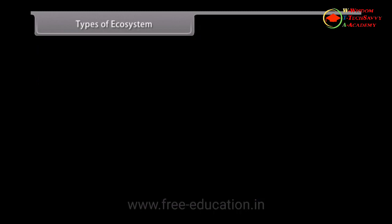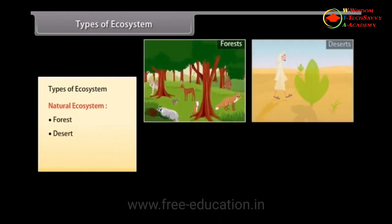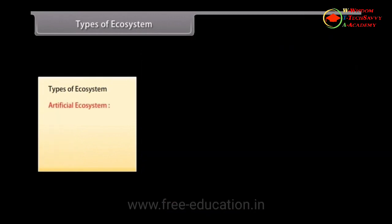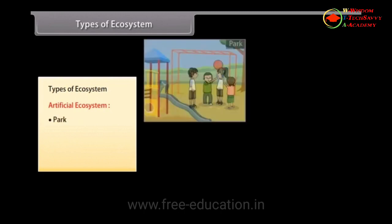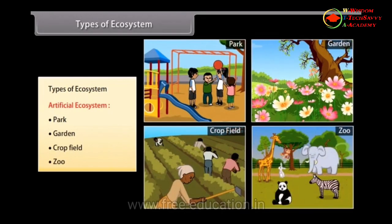Types of Ecosystem: There are two different types of ecosystems. 1. Natural ecosystems, which include forests, deserts, grasslands, mountains, etc. 2. Artificial ecosystems, which include parks, gardens, crop fields, zoos, etc.